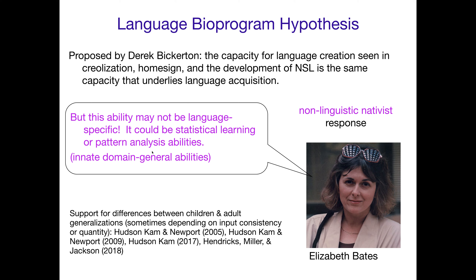It could be certain types of pattern analysis abilities, and these things might differ between children and adults — which is why children have the capacity for language creation that seems very different from what adults do. There is quite a bit of support for differences between child and adult generalizations depending on how consistent or how much input is experienced. Children may do different things than adults. The response to the language bioprogram hypothesis is that whatever they're doing, it's innate, but it's not specific to language — it's non-linguistic abilities that are innate, allowing the capacity for language creation that we see.